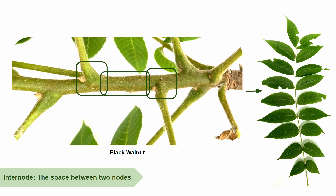So, if you find a bud, follow the petiole, and if it has a bunch of leaflets, it's a compound leaf. If there is only a single leaf blade or lamina, the leaf is simple.